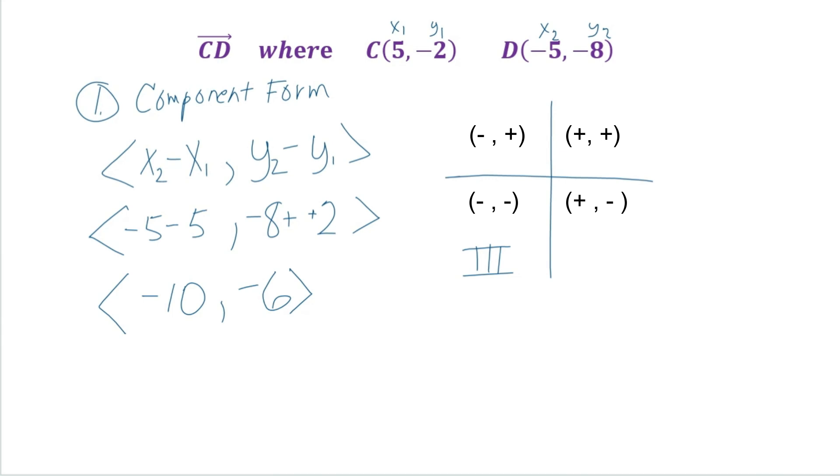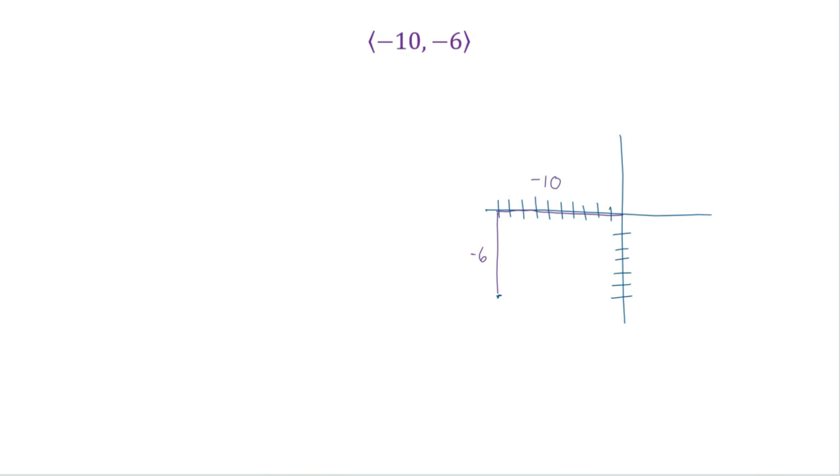And that's going to be important when we determine the angle direction. So here we found the component form, negative 10 and negative 6. Over here, I drew the graph where we're in the third quadrant.